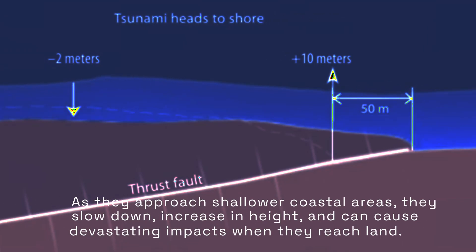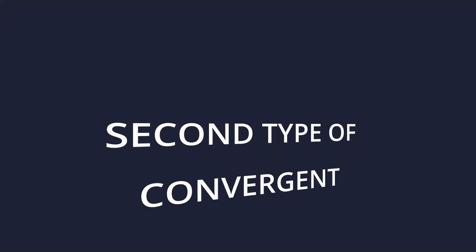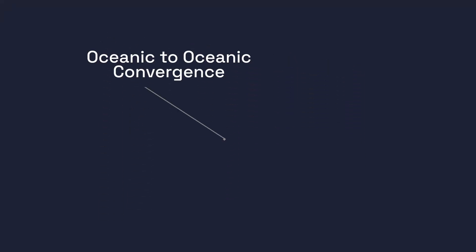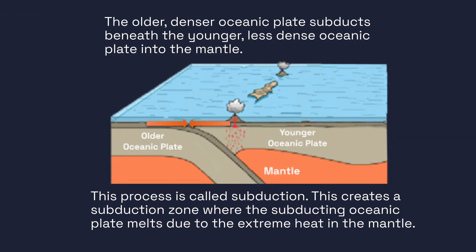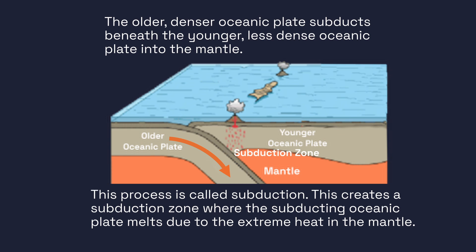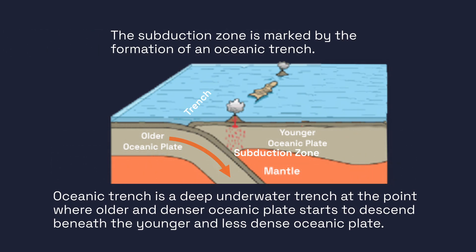As tsunamis approach shallower coastal areas, they slow down, increase in height, and can cause devastating impacts when they reach land. The second type of convergent plate boundary occurs between two oceanic plates. When two oceanic plates converge, the older, denser oceanic plate subducts beneath the younger, less dense oceanic plate into the mantle. This creates a subduction zone where the subducting plate melts due to the extreme heat in the mantle.